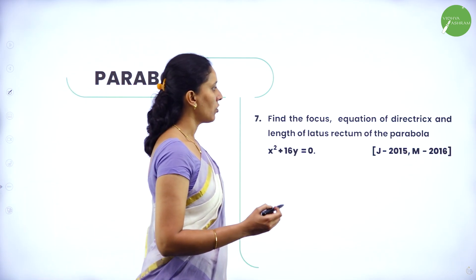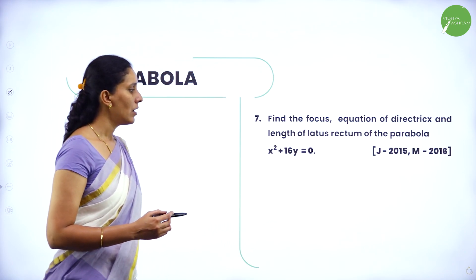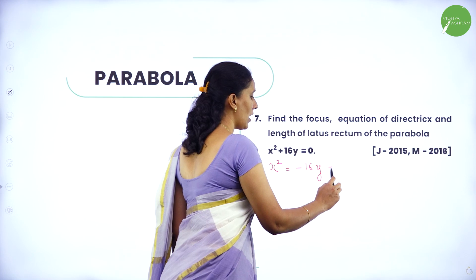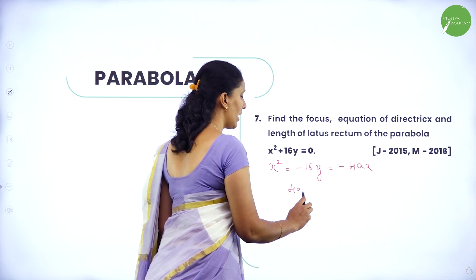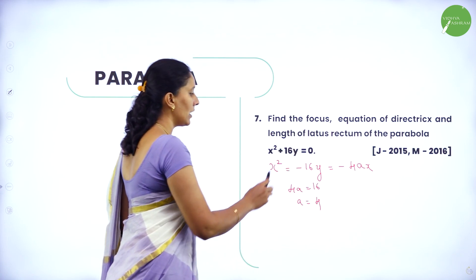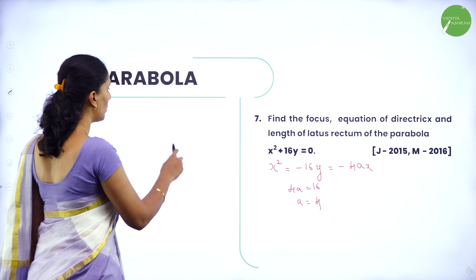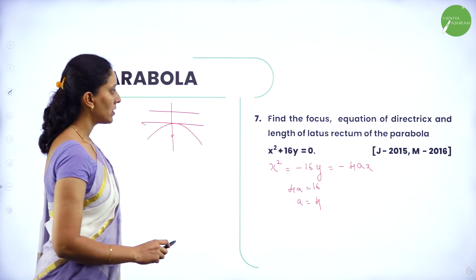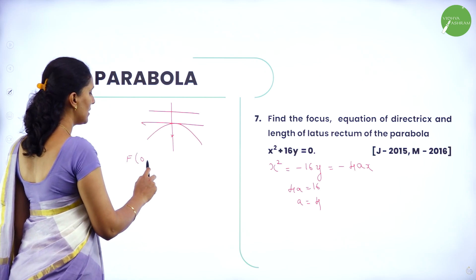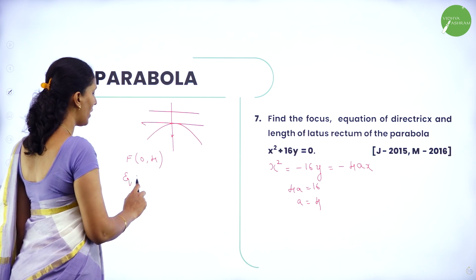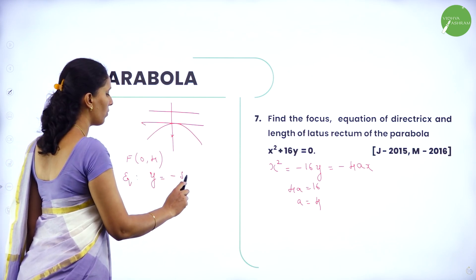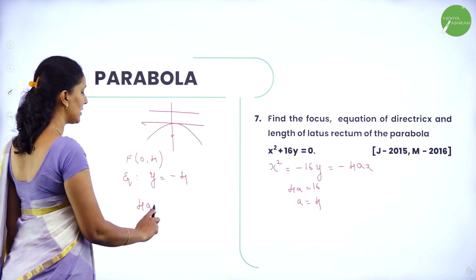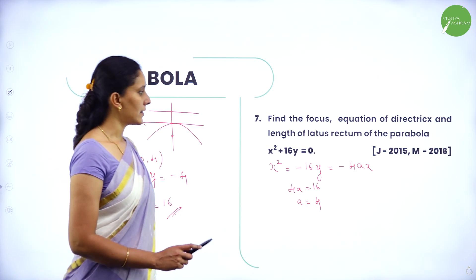Find the focus, equation of directrix, and length of latus rectum of the parabola x² + 16y = 0. This can be written as x² = minus 16y, compared with minus 4ax giving 4a = 16 and a = 4. This is a downward parabola. Focus = (0, minus 4) and equation of directrix is y = 4. Length of latus rectum = 4a = 16.